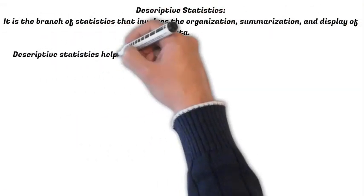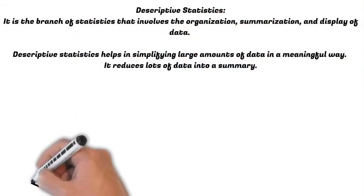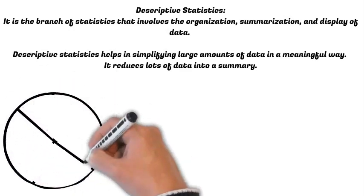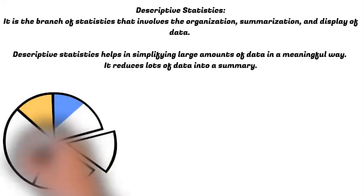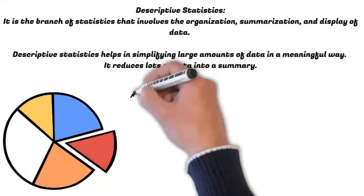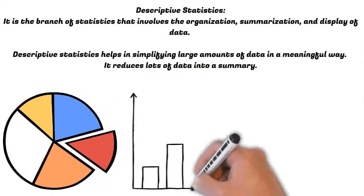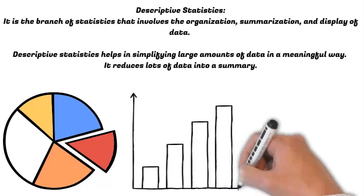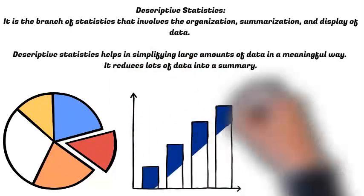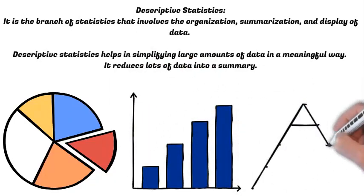Now, the first branch of statistics is descriptive statistics. It is the branch of statistics that involves the organization, summarization, and display of data. Descriptive statistics helps in simplifying large amounts of data in a meaningful way.